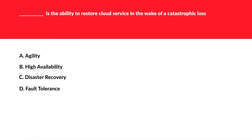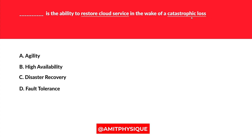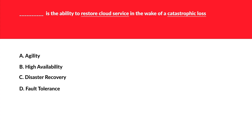The first question is: ___ is the ability to restore cloud services in the wake of catastrophic loss. The keywords are 'restore cloud service' and 'catastrophic loss.' The first option is agility. Agility is the allocation and de-allocation of resources — for example, you want 8 GB of RAM and the next instant you want 16 GB of RAM. That is agility; it is not related to catastrophic loss. So A is wrong. B is high availability. High availability is when your resources should remain alive, especially when you want to meet the SLAs.